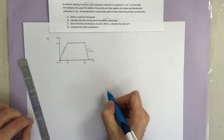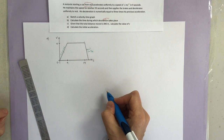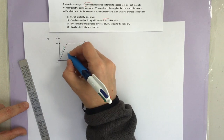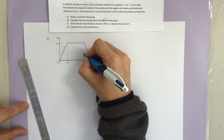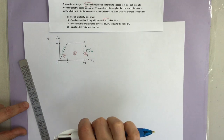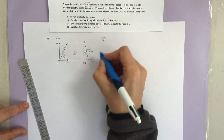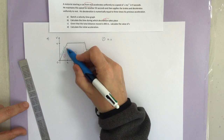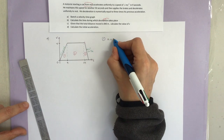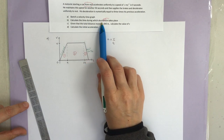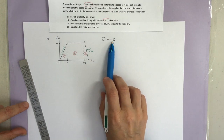Part B: calculate the time during which the deceleration takes place. We've got a few unknowns, so let's think about this. If I call this the first part, second part, and third part of the motion — in the first part, the acceleration is equal to change in velocity over time. The change in velocity is V and the change in time is 9. I'm asked for the deceleration time, but we're going to have two unknowns.